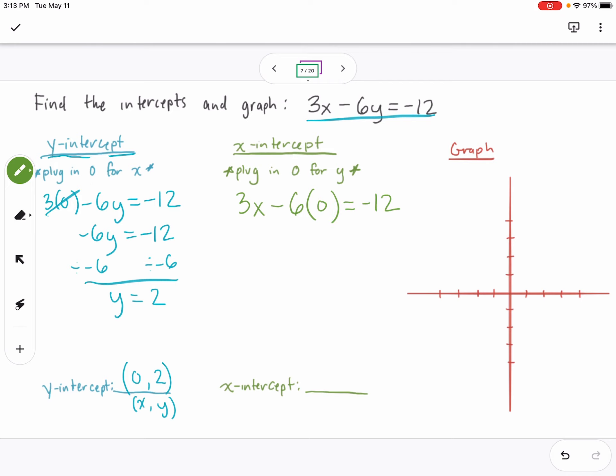Negative 6 times 0 is 0, so that cancels out, leaving me with 3x equals negative 12. To get x by itself, I'll divide by 3 on both sides. I get x equals negative 4, since negative divided by positive is negative and 12 divided by 3 is 4.